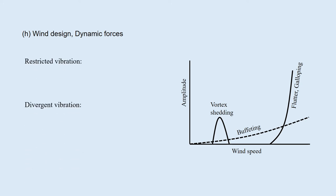These are classified into two categories. Restricted vibration and divergent vibration. In restricted vibration, the amplitude of the girder increases at relatively low wind speed, but it saturates at a certain level. Vortex shedding and buffeting caused by the wind fluctuation are in this category.